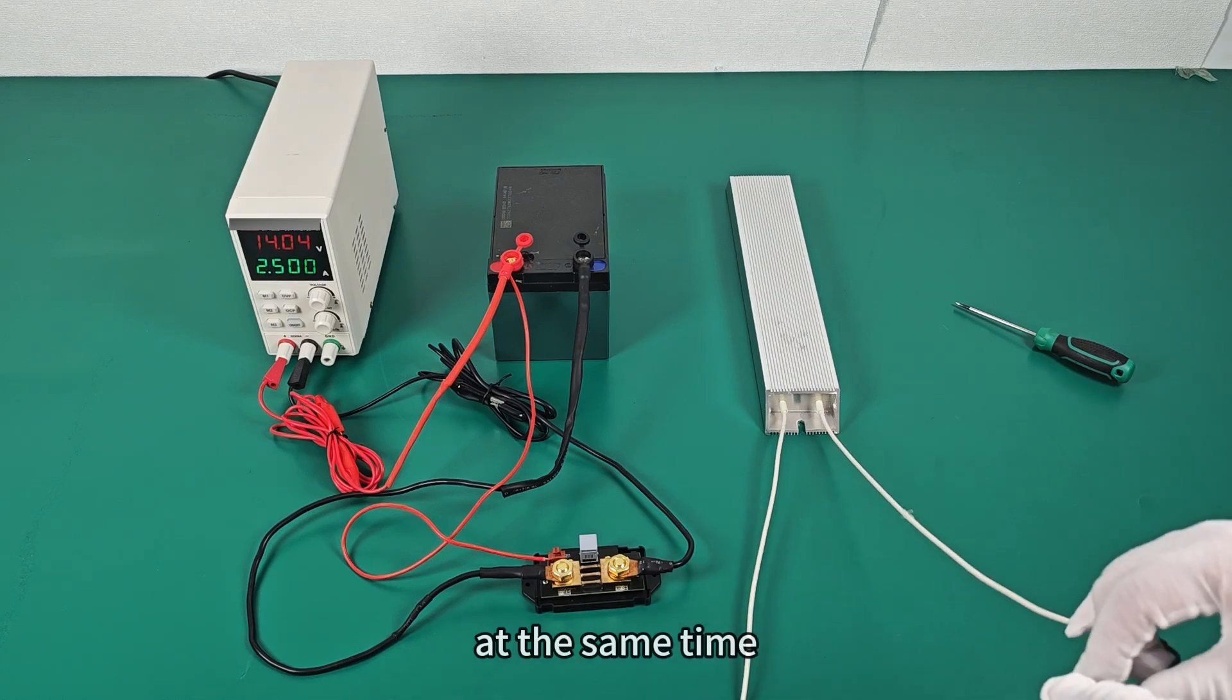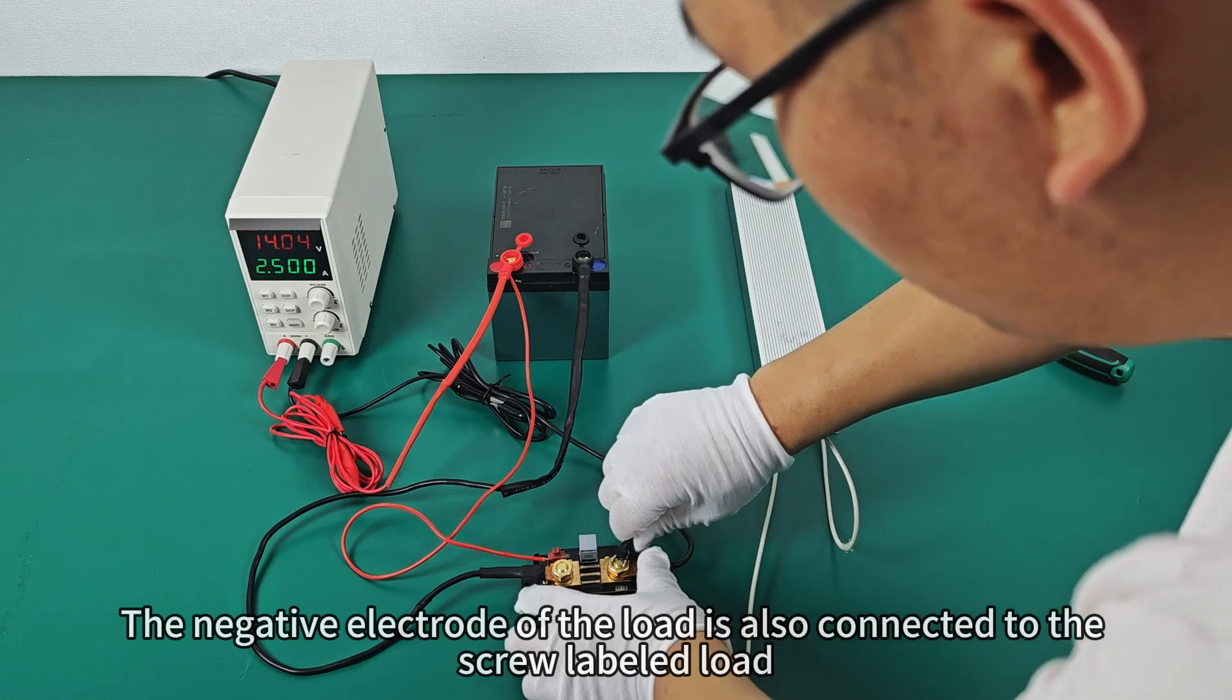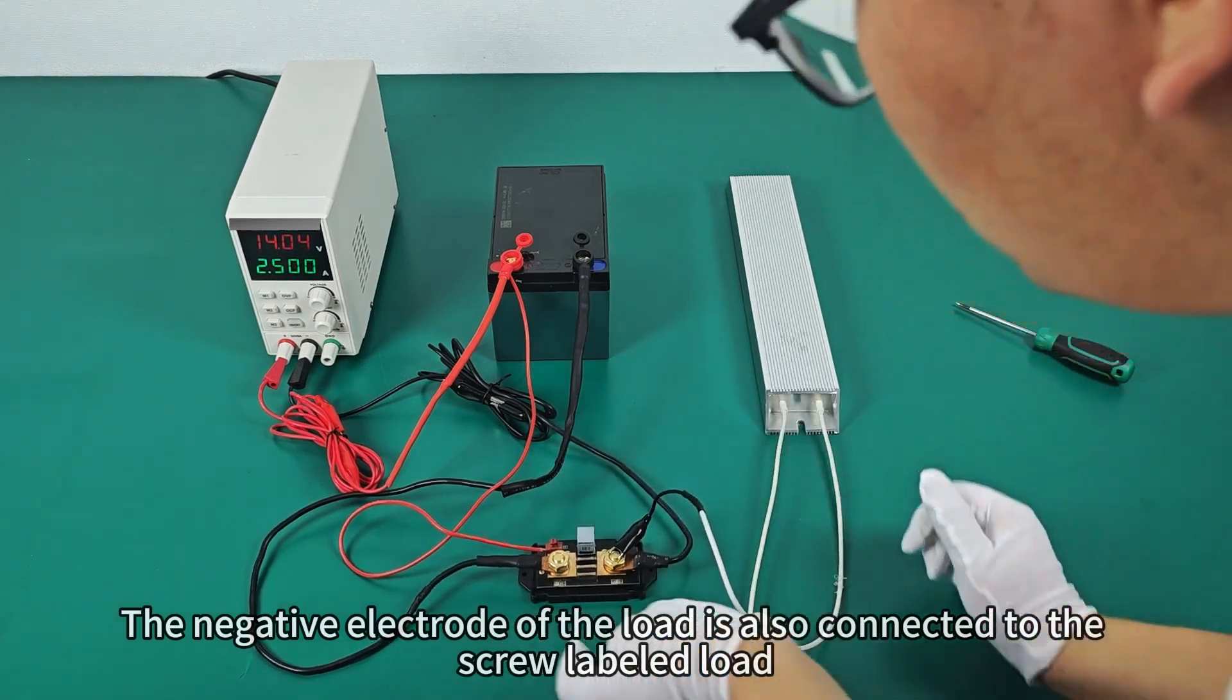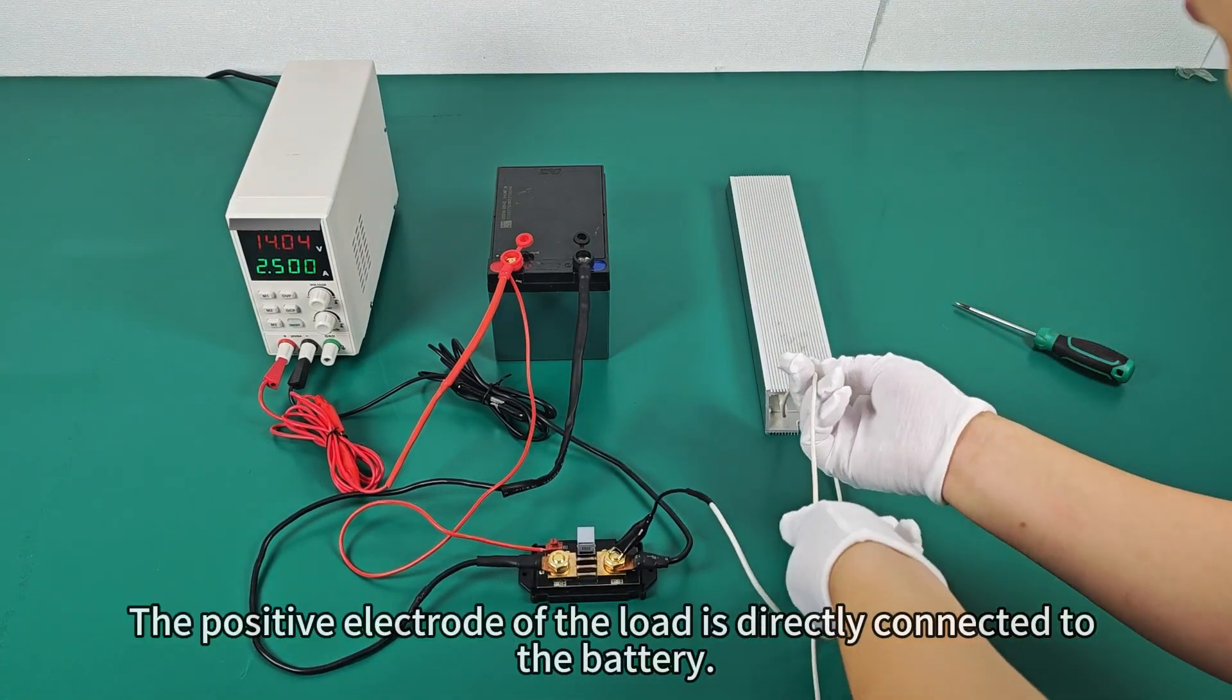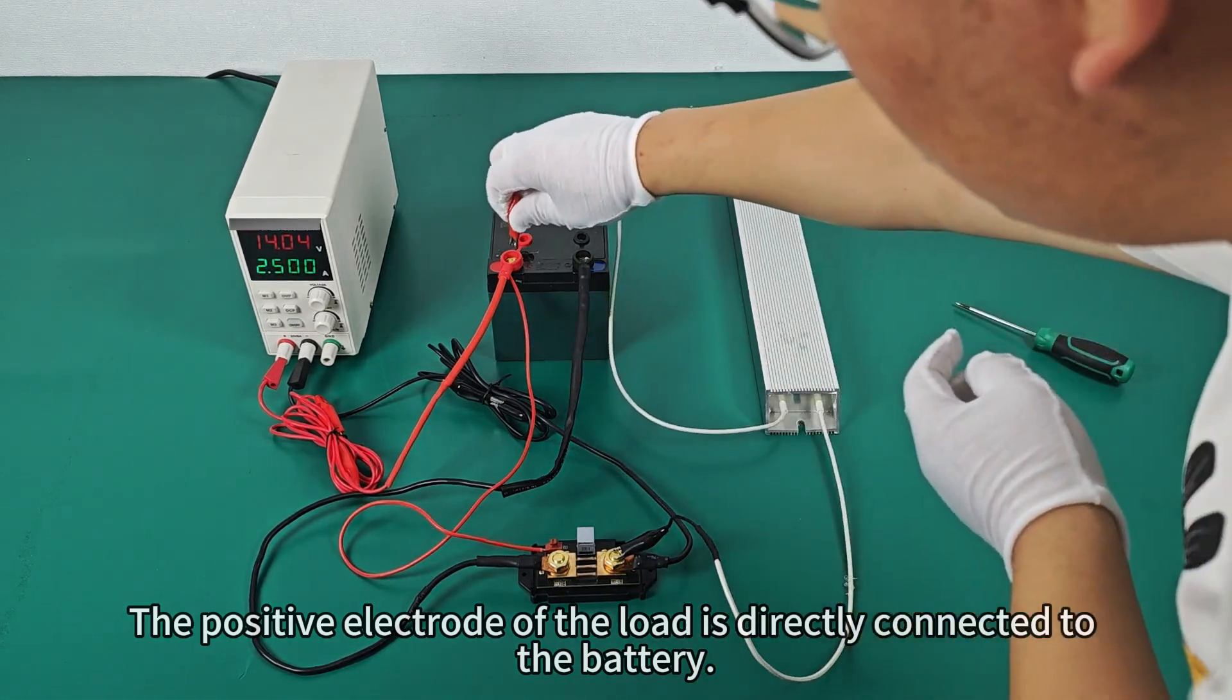At the same time, the negative electrode of the load is also connected to the screw labeled load. The positive electrode of the load is directly connected to the battery.